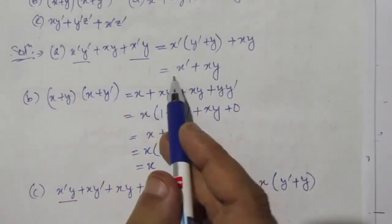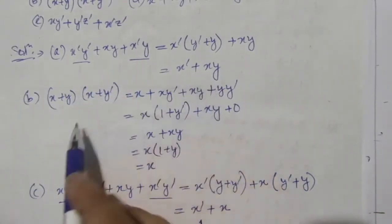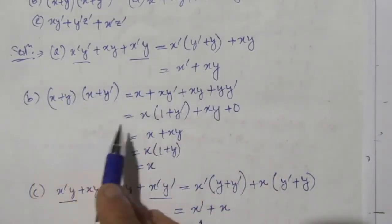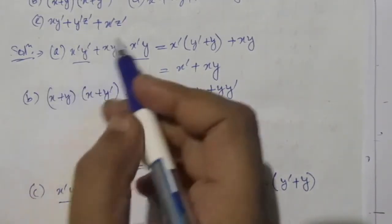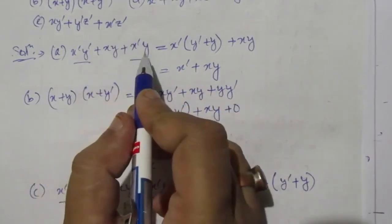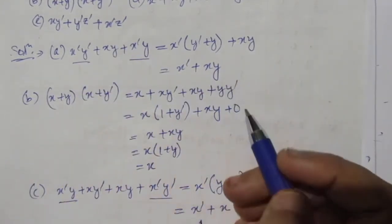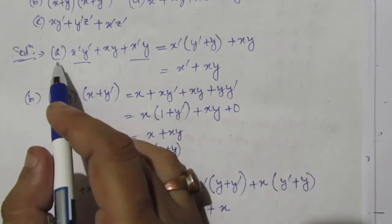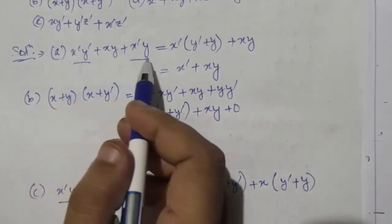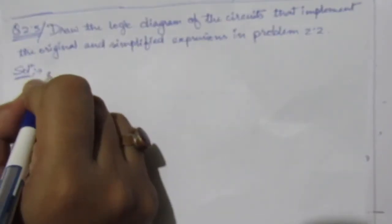After the simplification, the original expression becomes the simplified one, and the next one becomes this, and so on. We have to draw the logic diagram for each original expression and its corresponding simplified expression. So let us draw the logic diagrams one by one. First we will draw the diagrams for the original expressions, then for the simplified expressions. Part A: